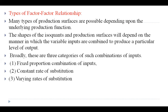Many types of production surfaces are possible depending upon the underlying production function. The shape of the isoquant and production surface will depend on the manner in which variable inputs are combined to produce a particular level of output. Broadly, there are three categories of such combinations of inputs.